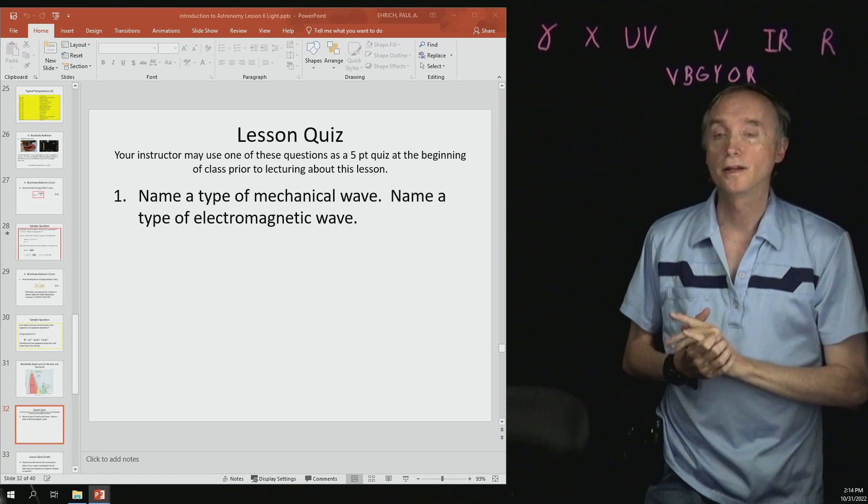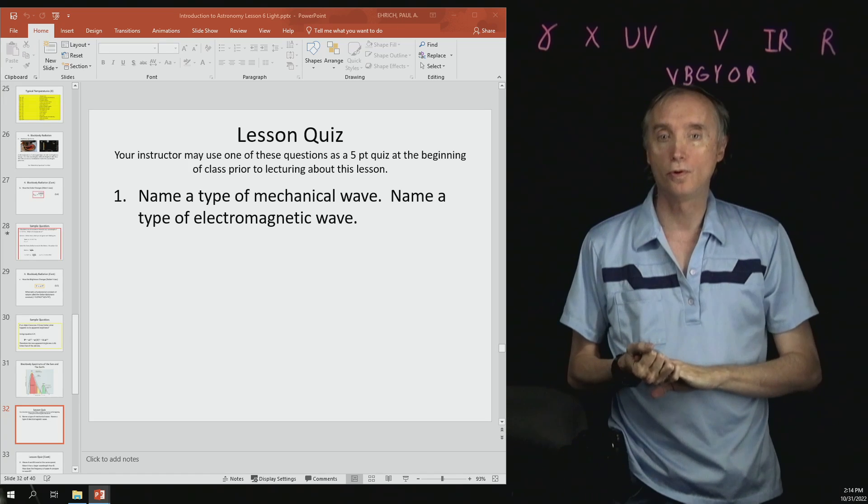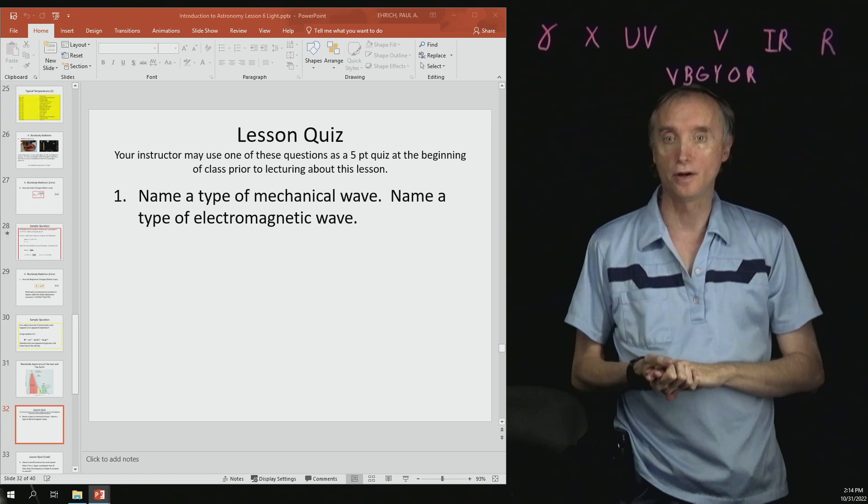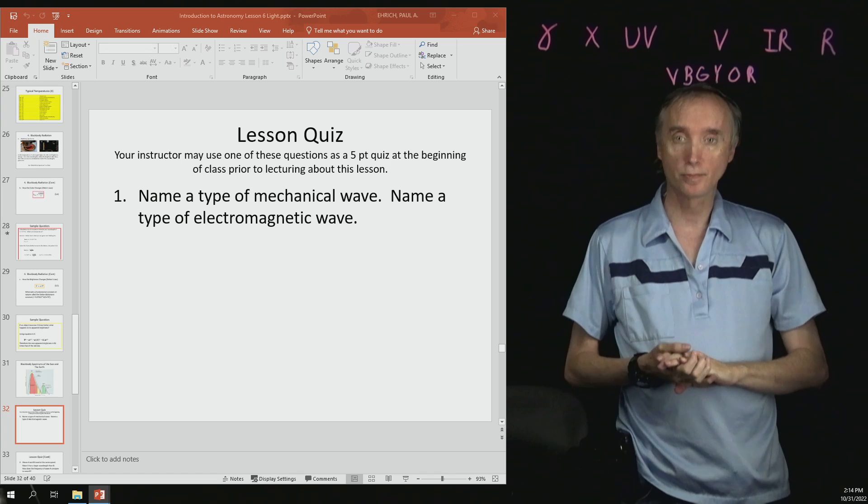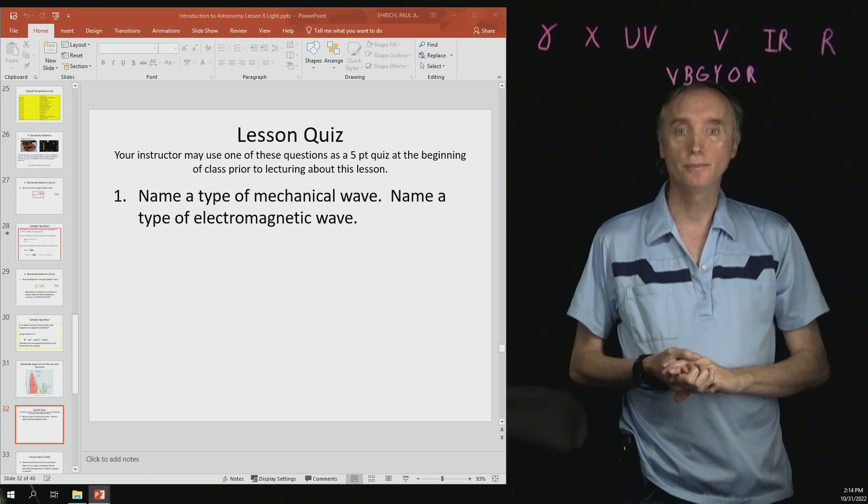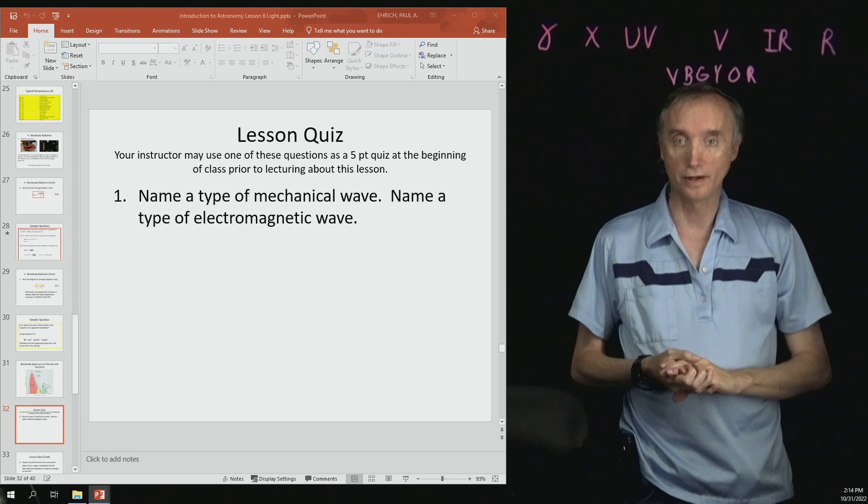I'm back and now let's do our lesson quiz for lesson number six on light. So question number one, name a type of mechanical wave.